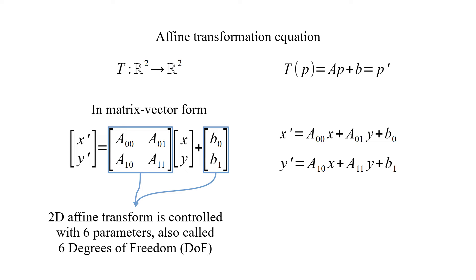2D affine transform is controlled with 6 parameters, also called 6 degrees of freedom. Zero vector origin may be mapped to a different point depending on B.